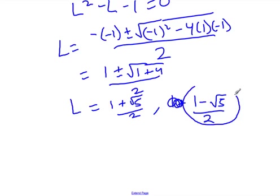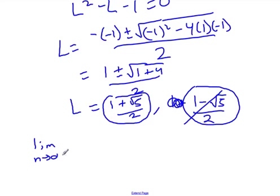Now this number is negative, and we know the limit cannot be negative, so we're going to cross that out. And that means that this is our answer, which is equal to the golden ratio. So the limit as n tends to infinity of the quotient of terms in the Fibonacci sequence equals 1 plus root 5 out of 2, which equals the golden ratio.